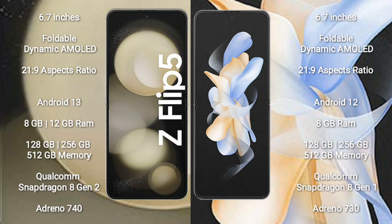Samsung Galaxy Z Flip 5 comes with 8GB or 12GB RAM and 128GB to 256GB internal storage, with a Qualcomm Snapdragon 8 Gen 2 processor and Adreno 740 GPU. Samsung Galaxy Z Flip 4 comes with 8GB RAM and 128GB to 256GB internal storage, with a Qualcomm Snapdragon 8 Gen 1 processor and Adreno 730 GPU.